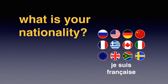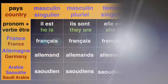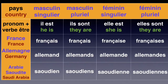Today we are going to talk about different nationalities, so you will learn how to say where you are from. And in my case, je suis Française. Here you have four columns: masculin singulier, masculin pluriel, féminin singulier, and féminin pluriel. I'm just going to read two of those: the masculin singulier and the féminin singulier.